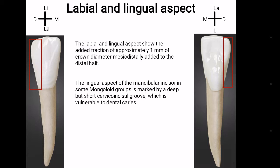In mongoloid group of people, a cervico-incisal groove can be seen on the lingual surface of the lateral incisor which makes the tooth more vulnerable to dental caries.